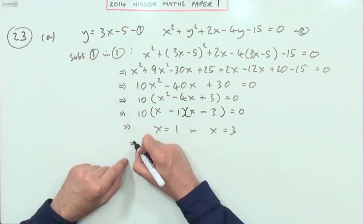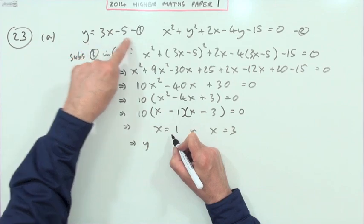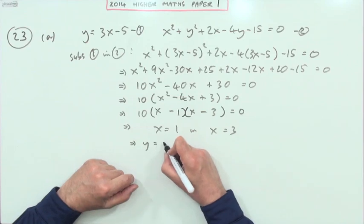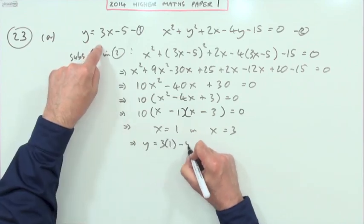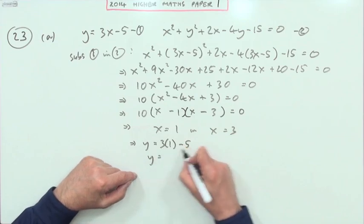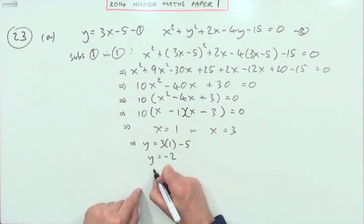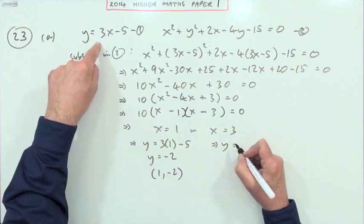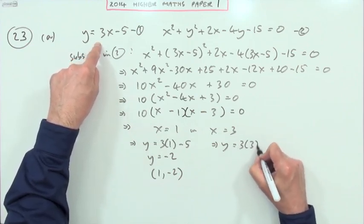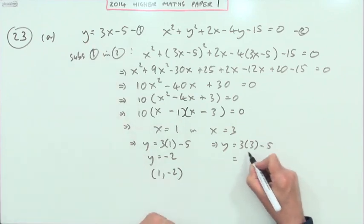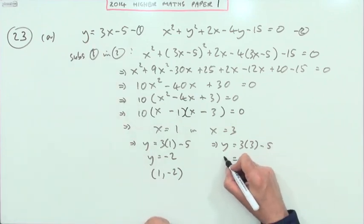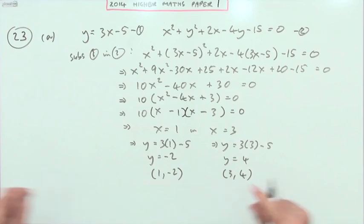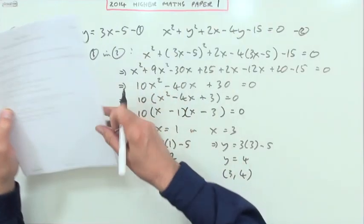If x is 1, pop it into this one. That'll be 3 times 1 minus 5, so y is going to be 3 minus 5 is negative 2. So there's one point, 1 negative 2. And if x is 3, popping it back into this one, you've got 3 times 3 minus 5, so it's going to be 9 minus 5, so that means y is 4. So there's another point, 3, 4.